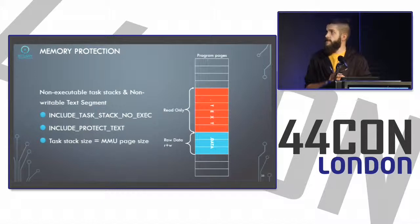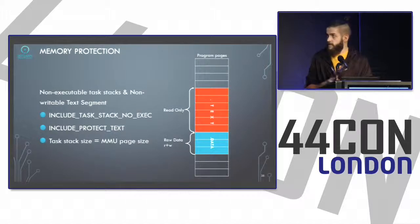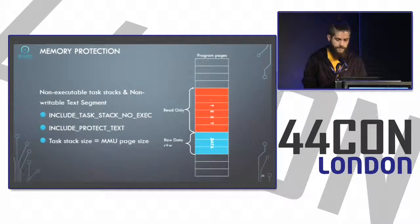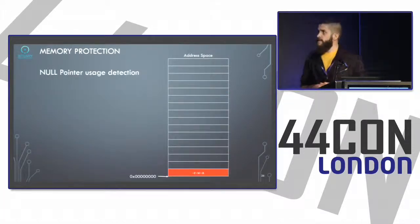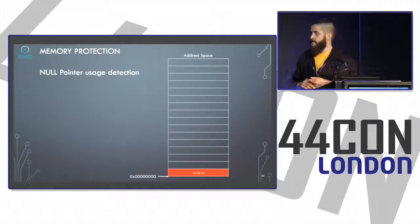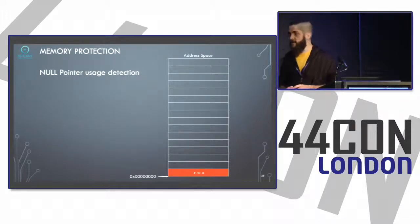They also introduced non-executable task stacks and a non-writable text segment. The text segment of the program is read-only, and the data segment is read-and-write. Starting from VxWorks 6, all task stacks are non-executable if you include the task NX parameter when creating the project. To detect null pointer usage, the memory area starting from zero is set to non-readable, non-writable, and non-executable — accessing it raises an exception.